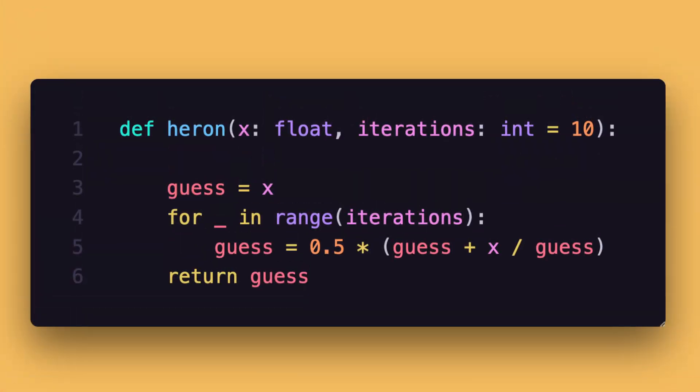The code for Heron's method seems relatively unspectacular. First, I set the initial guess to a given number x. Keep in mind that this initial guess does not have to be the number itself necessarily.